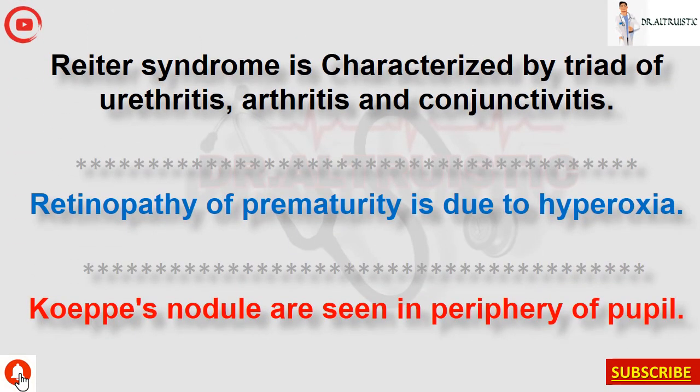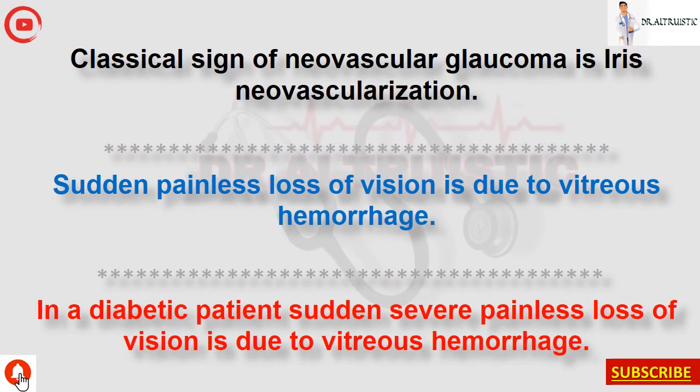Reiter syndrome is characterized by a triad of urethritis, arthritis, and conjunctivitis. Retinopathy of prematurity is due to hyperoxia. Koeppe's nodules are seen in the periphery of the pupil. Classical sign of neovascular glaucoma is iris neovascularization. Sudden painless loss of vision in a diabetic patient is due to vitreous hemorrhage.